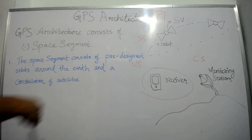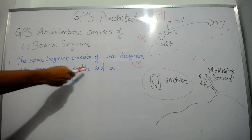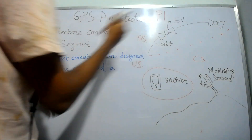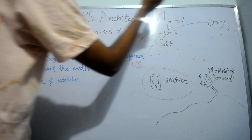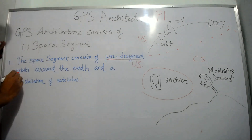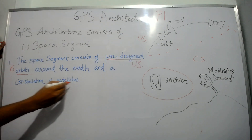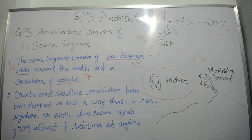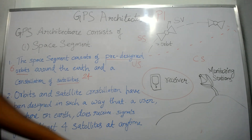The space segment consists of pre-designed orbits around the earth and a constellation of satellites — as you can see, these are the satellites and this is the orbit. Orbits and satellite constellation have been decided in such a way that a user anywhere on earth under an open sky does receive signals from at least four satellites at any time.